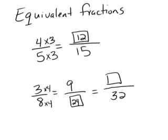So I do the same thing to the top. Three times four is twelve. And there's my answer. Three eighths equals nine twenty-fourths and it also equals twelve thirty-seconds.